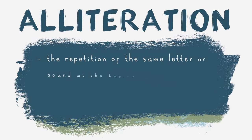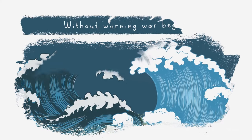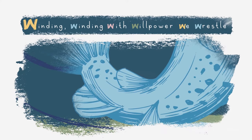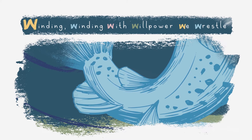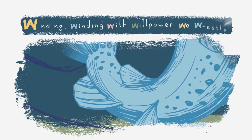Alliteration is the repetition of the same letter or sound at the beginning of words. It's used to create rhythm, mood and tone within a poem. This poem is whooshing with alliteration — almost every word begins with a 'w,' and the repetition of 'w' sounds creates a rolling rhythm that conveys the wild, watery world of the wise wahoo fish.